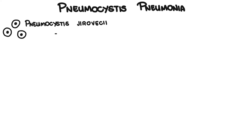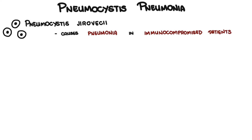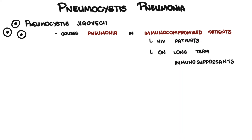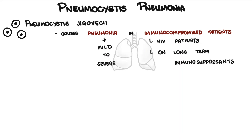Pneumocystis jirovecii causes Pneumocystis pneumonia in immunocompromised patients — basically patients who have a weak immune system. These patients include people who have HIV or those on long-term immunosuppressants, such as prednisone. Pneumocystis jirovecii can cause mild to very severe, life-threatening respiratory infections.